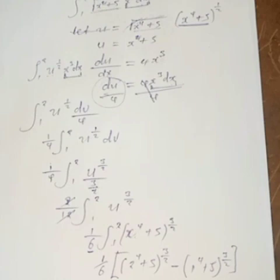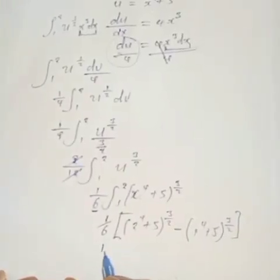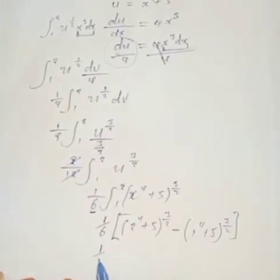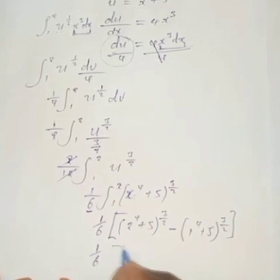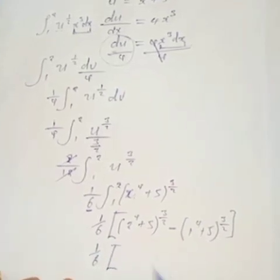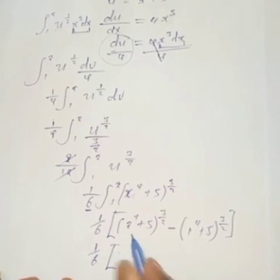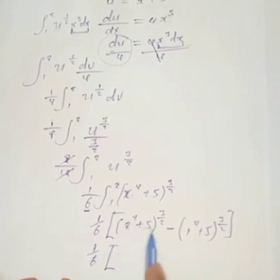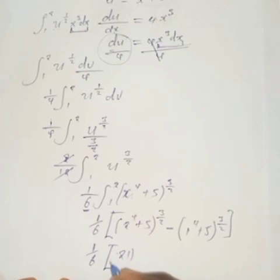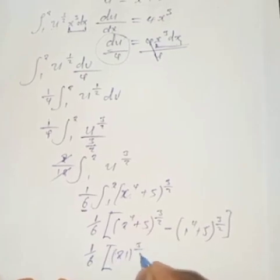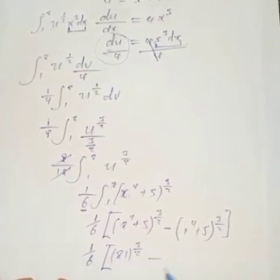So we have 1 over 6 times the expression. Now evaluating: 2 to the power 4 is 16, plus 5 gives us 21, to the power 3 over 2. And 1 to the power 4 is 1, plus 5 gives us 6, to the power 3 over 2. So we have 1 over 6 times 21 to the power 3 over 2, minus 6 to the power 3 over 2.